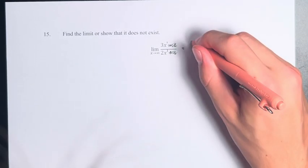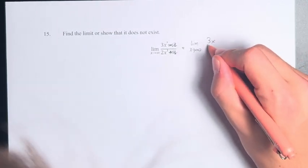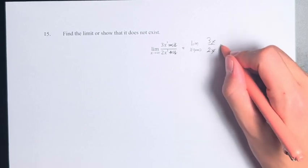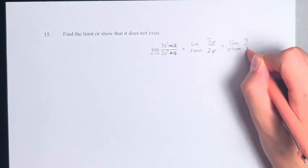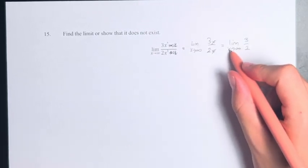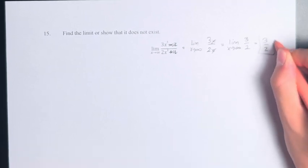So this is just the limit as x approaches infinity of 3x over 2x. The x's cancel. We have the limit as x approaches infinity of 3 over 2. No matter what x is, 3 over 2 is just equal to 3 over 2. So that is the value of the limit.